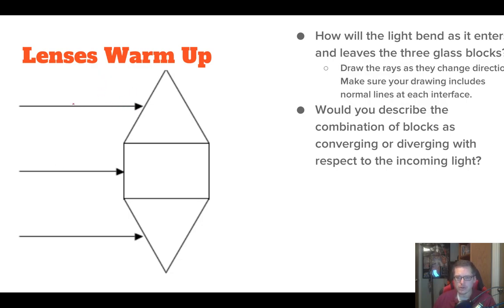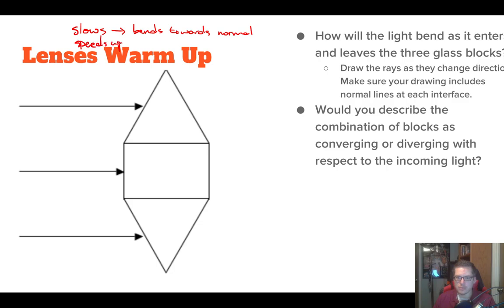If light comes in traveling through air and hits something made out of glass, we know that light will slow down when it crosses that boundary. And as it slows down, we know that when light slows, it bends towards the normal. And then if it speeds up, it bends away from the normal.